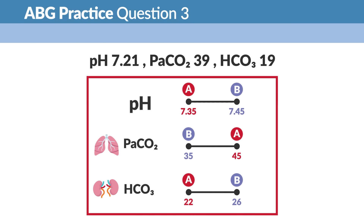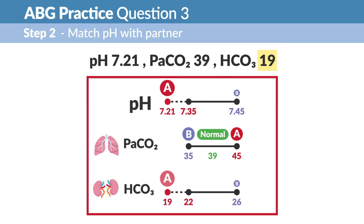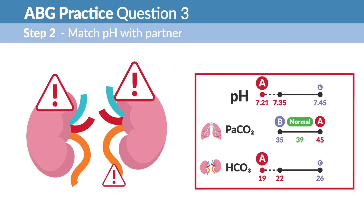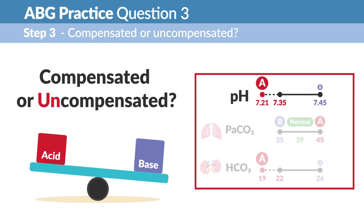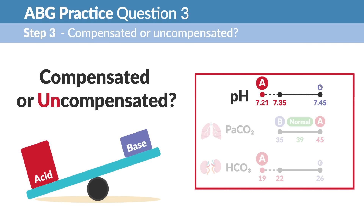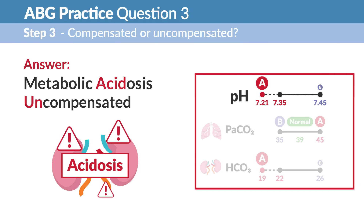ABG practice question three: pH 7.21, PaCO2 39, HCO3 19. Step one — pH 7.21 is way below 7.35, so it's acidosis. Step two — CO2 is 39, which is normal, so no match. HCO3 is 19, which is on the acid side — acid match with the kidney icon, so it's metabolic acidosis. Step three — pH is not normal, so it's uncompensated. Answer: metabolic acidosis, uncompensated.